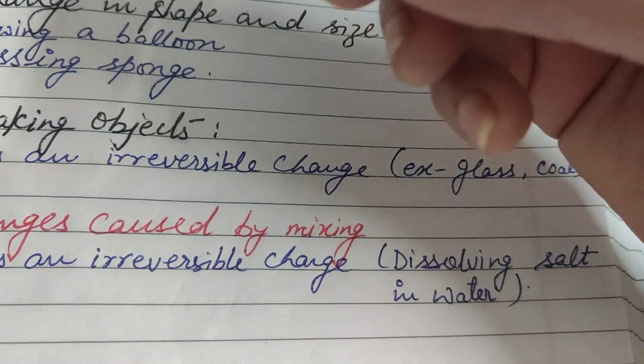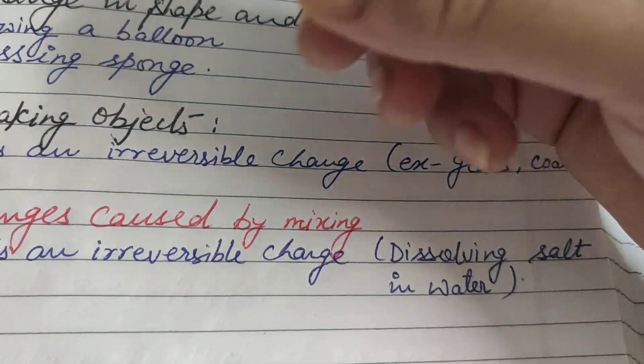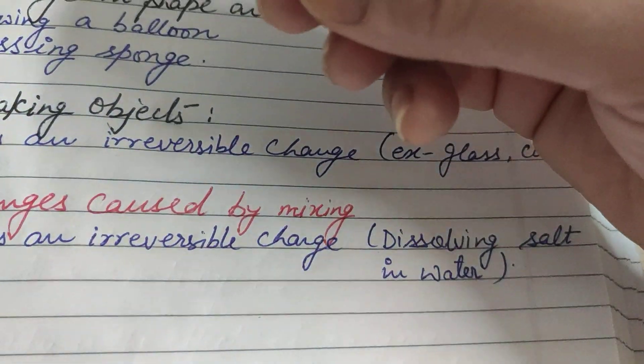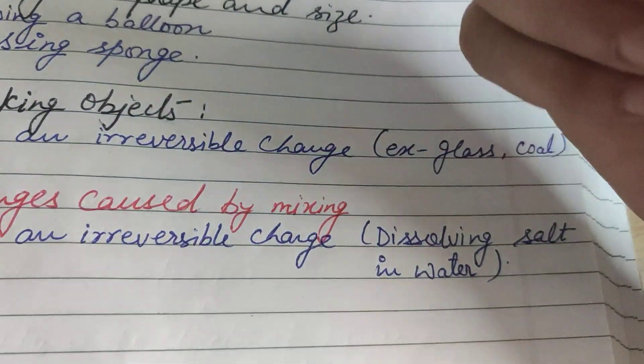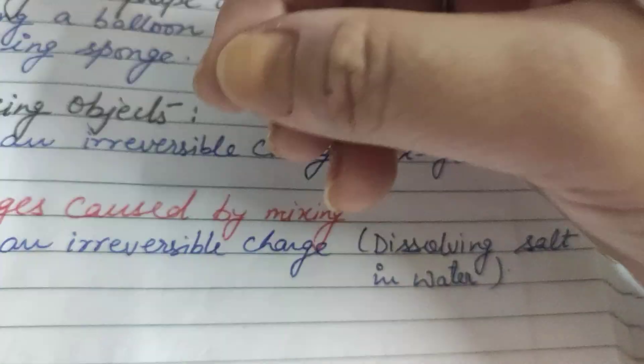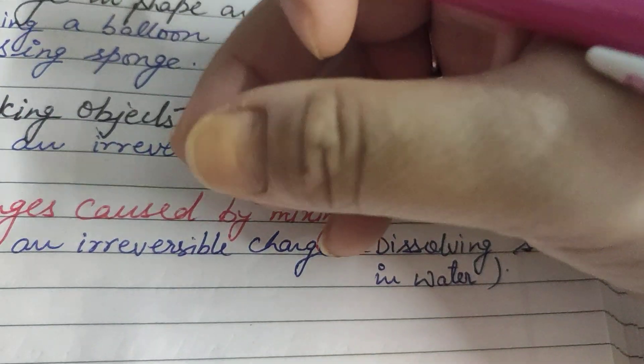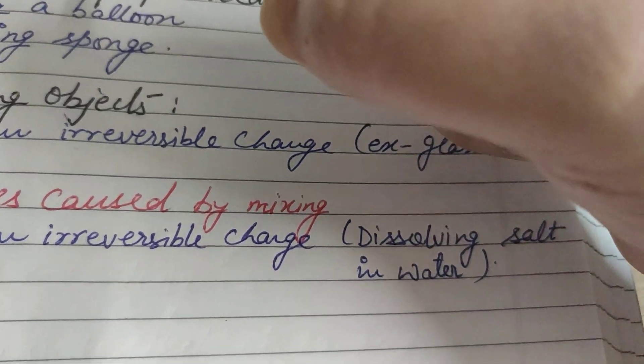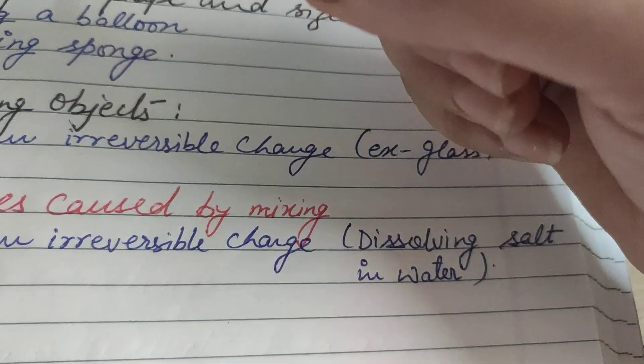When quicklime is mixed with water, it is converted into slaked lime, and it is an irreversible change.